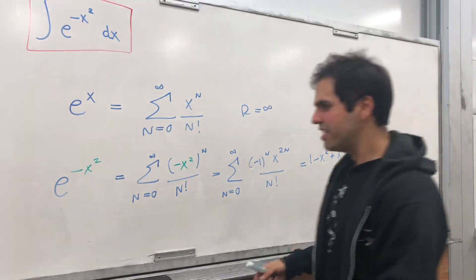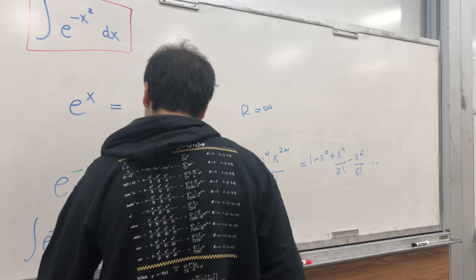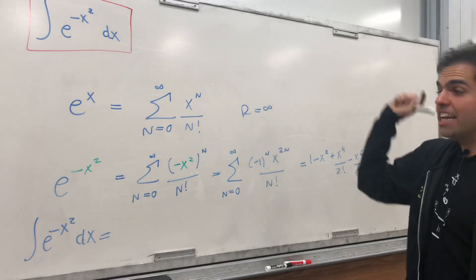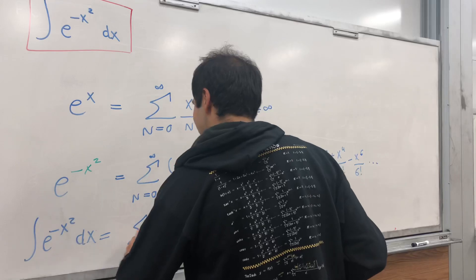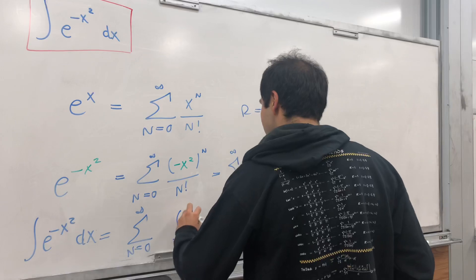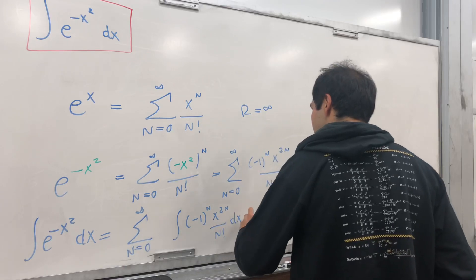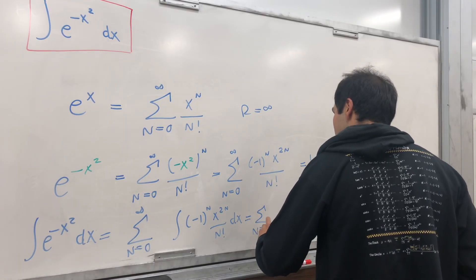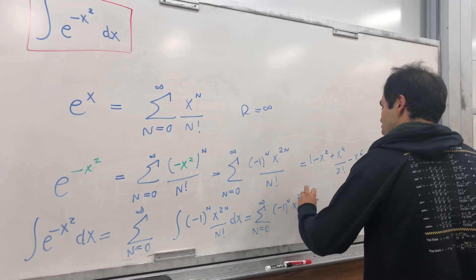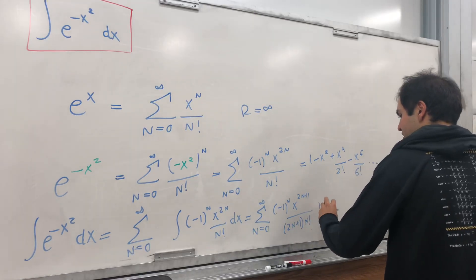Now, all you need to do is just integrate that. So integrate e of negative x squared dx. And the cool thing is you can literally integrate a power series term by term, and the radius of convergence is the same. So this becomes sum from n from zero to infinity of the integral of minus 1 to the n x to the 2n over n factorial dx. And this just becomes the sum from 0 to infinity of minus 1 to the n x to the 2n plus 1 over 2n plus 1 n factorial plus a constant.